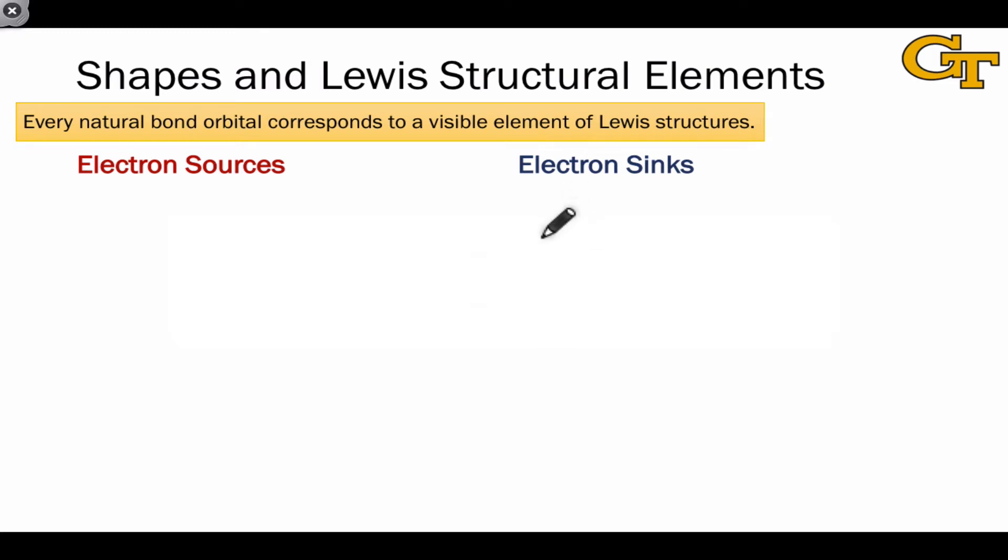The beautiful thing about natural bond orbital theory is that every natural bond orbital corresponds to a visible element of the Lewis structure of the molecule.